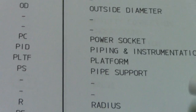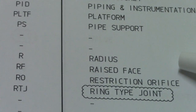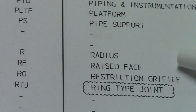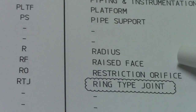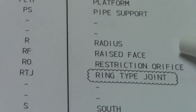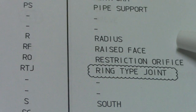PS is pipe support, R is radius, RF is raised face, RO is restriction orifice, and RTJ is ring type joint.